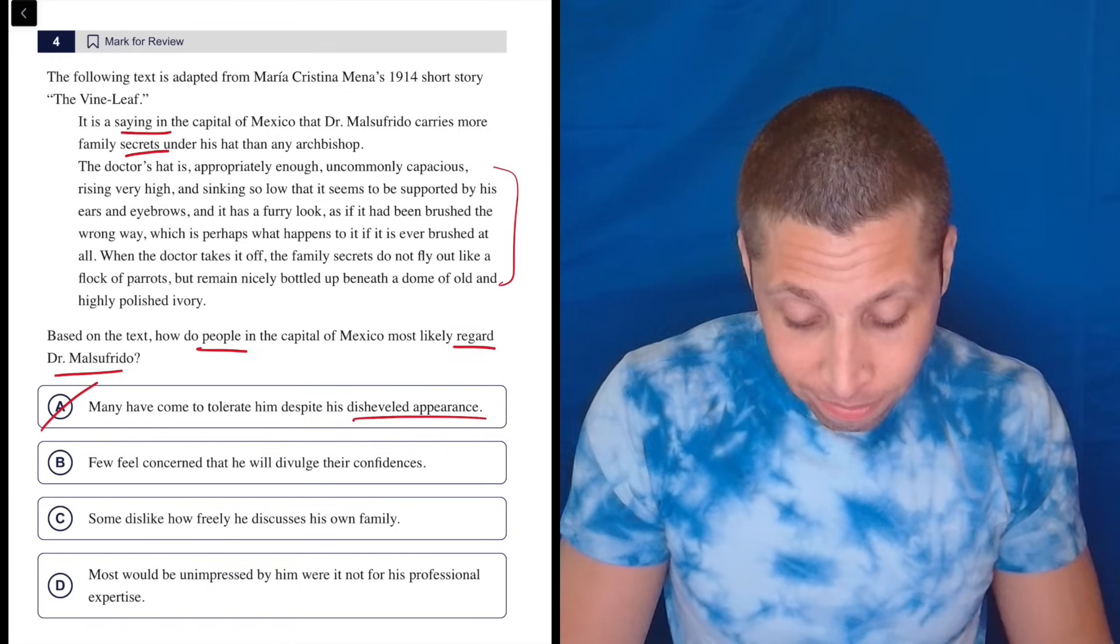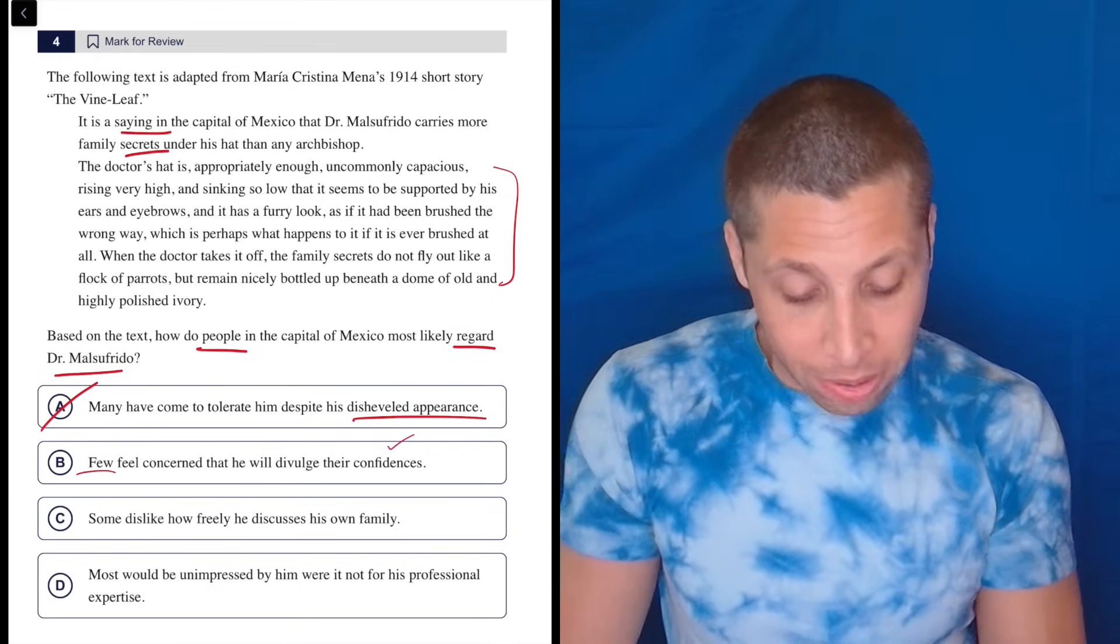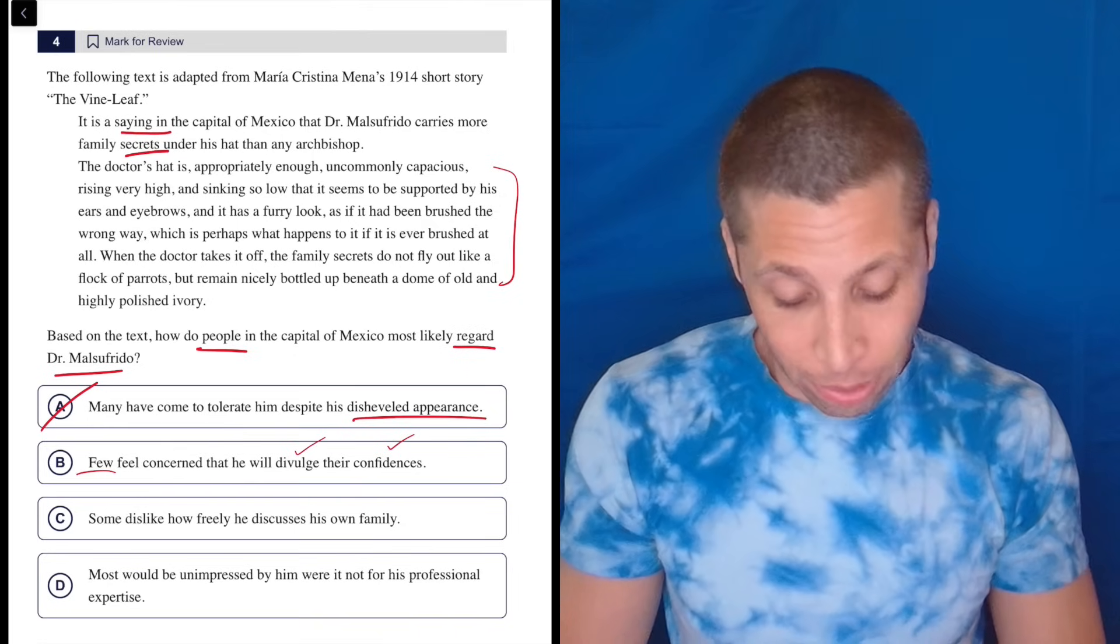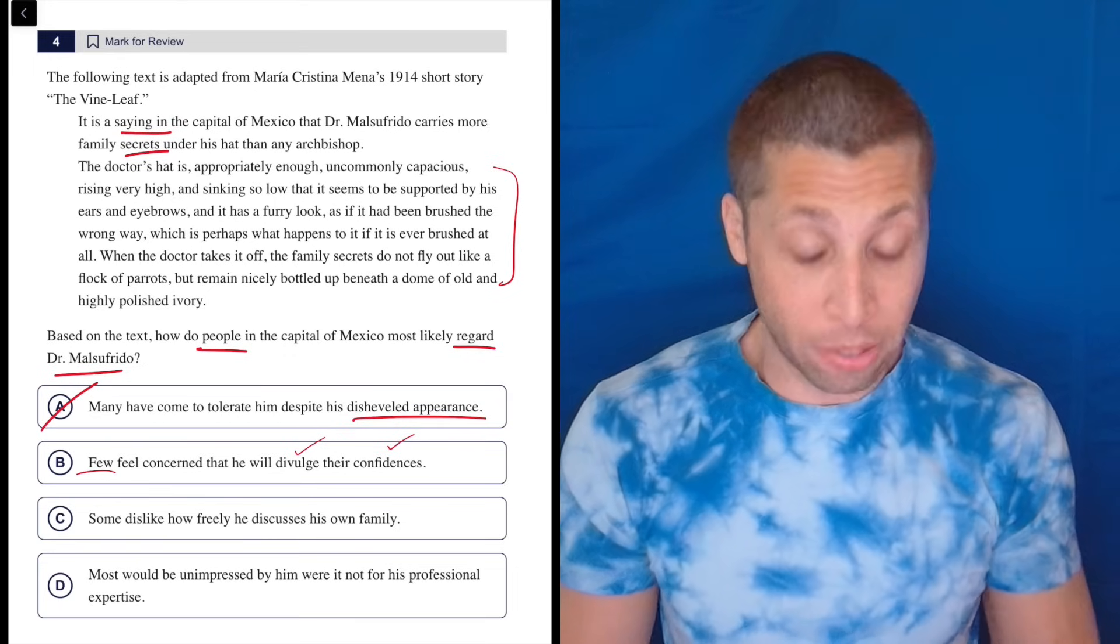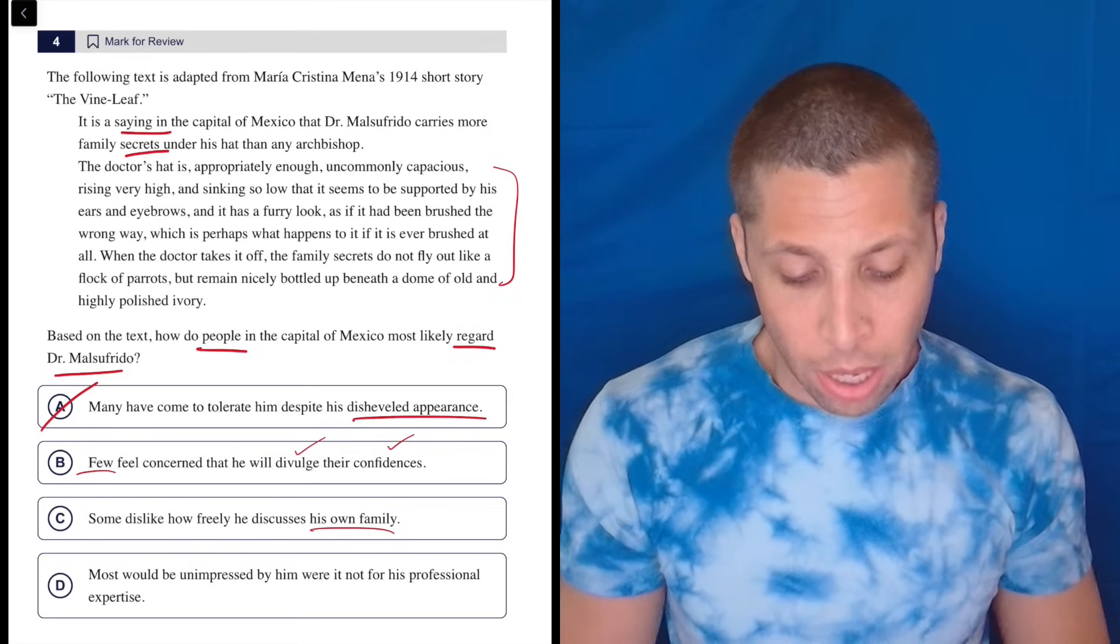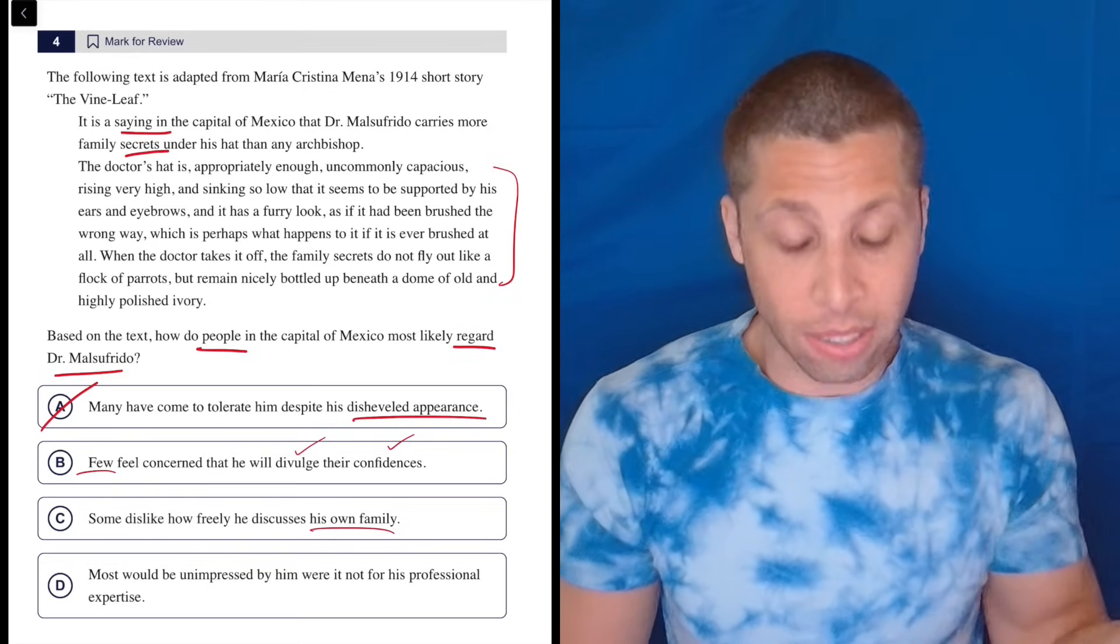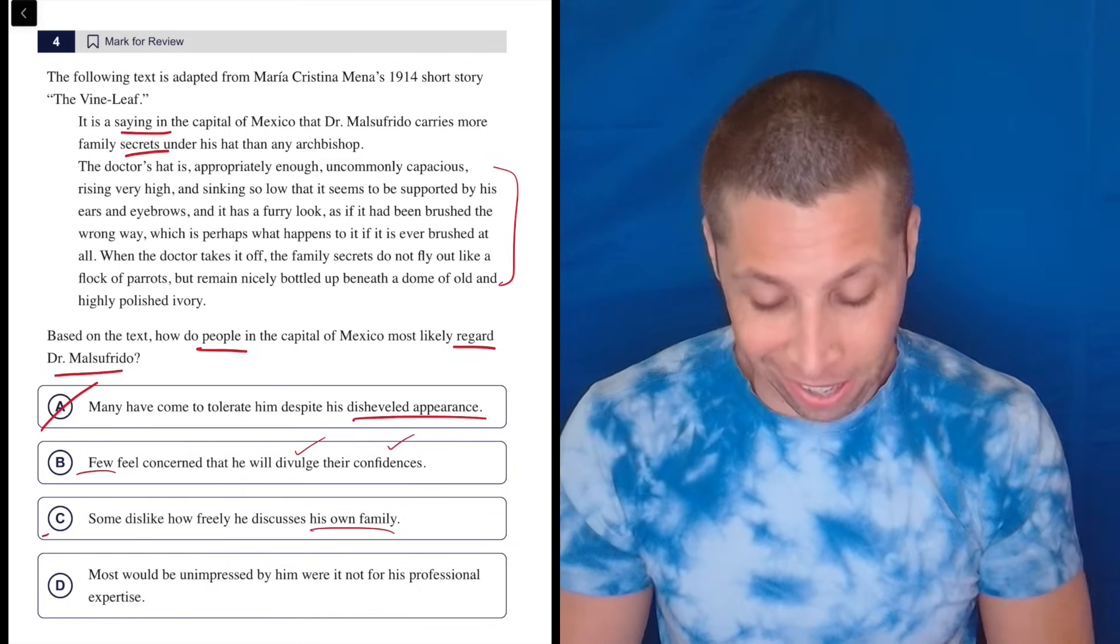I don't love that it's quantifying it, but certainly it's about secrets. It's about him not telling people. Okay, let's look at C. Some dislike how freely he discusses his own family. Well, they don't talk about his own family at all. They talk about other people's families is my assumption, because he's the doctor. But he also doesn't discuss anything. That's the whole point. It says that they're not being discussed. They're staying in his head.